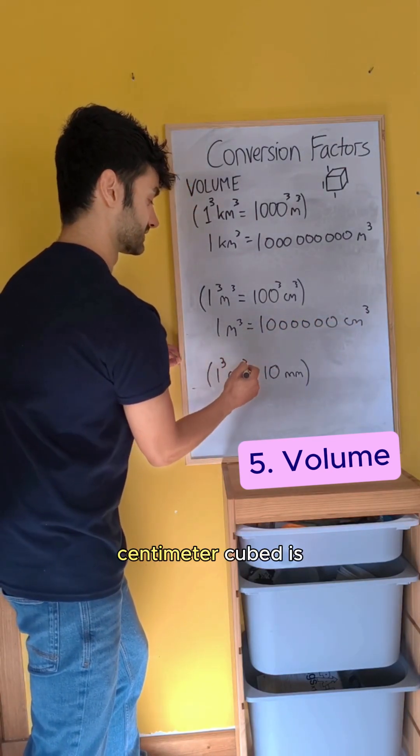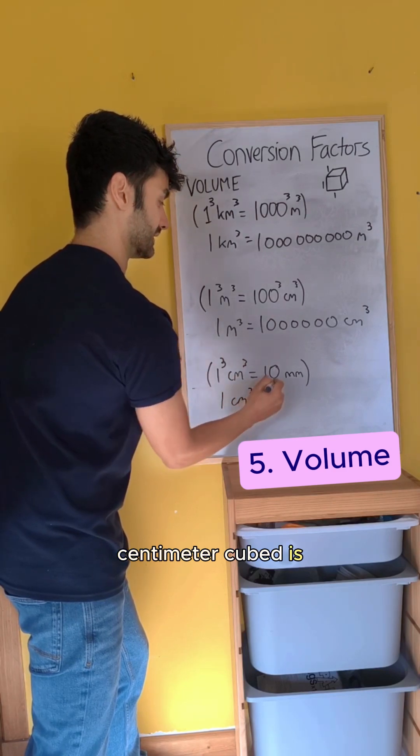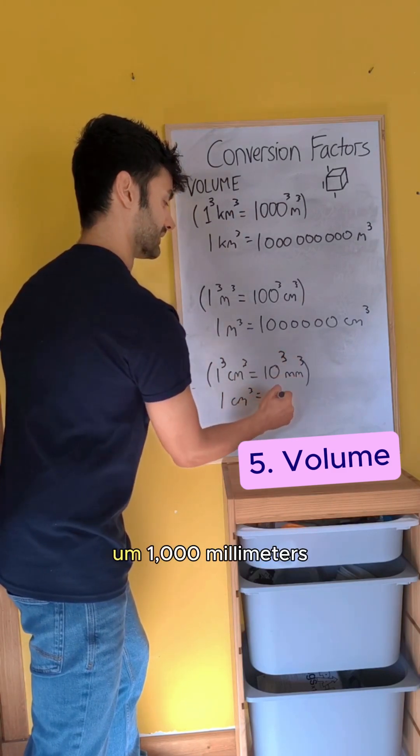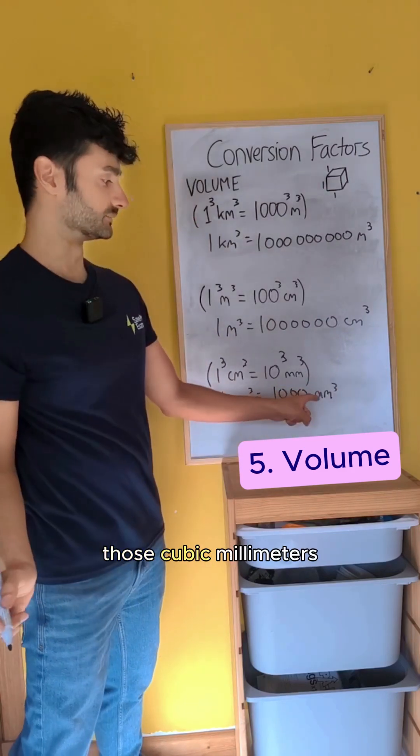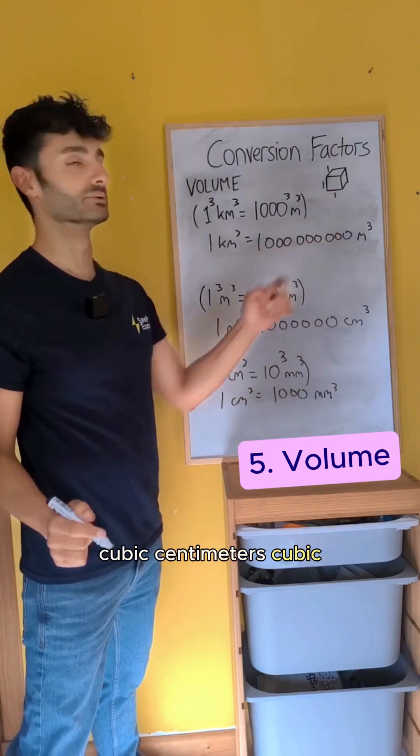And here, one centimeter cubed is, whoops, a thousand millimeters cubed. You can call those cubic millimeters, cubic centimeters, cubic meters.